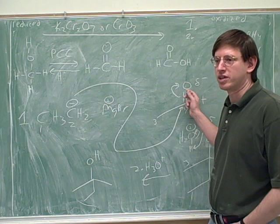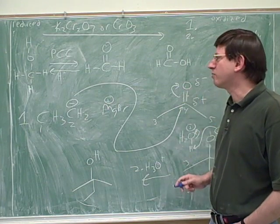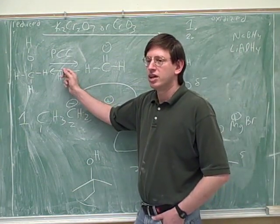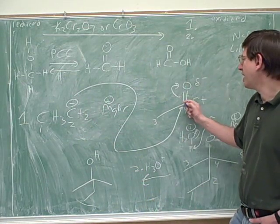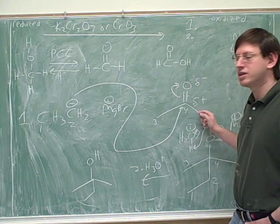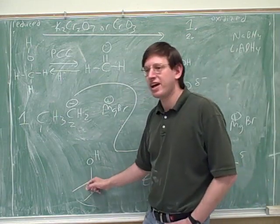So we can think of this as a reduction, because we're losing bonds to oxygen. But this is a more interesting reduction than we did here, because we didn't just turn it into an alcohol, we turned it into a more complicated alcohol. Here we had a carbonyl with only three carbons, and now we have a carbonyl with five carbons.